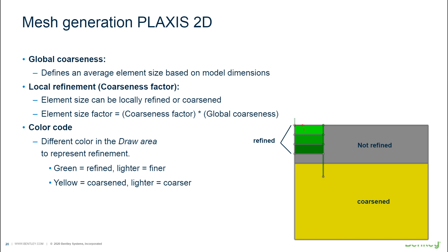We have a global coarseness setting. When you click on it — as you will see in the demo soon — this is very easily done. We have different definitions, like 'medium' or 'fine,' that help you generate elements. Always — and this is what we will do in every model we handle — you need to check and inspect the mesh that you generated. You must be very critical; you cannot rely only on the software making good decisions for you. The output we will see later will help us determine the quality of the mesh generated.